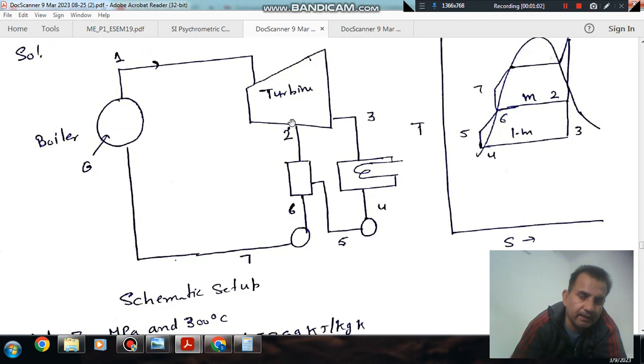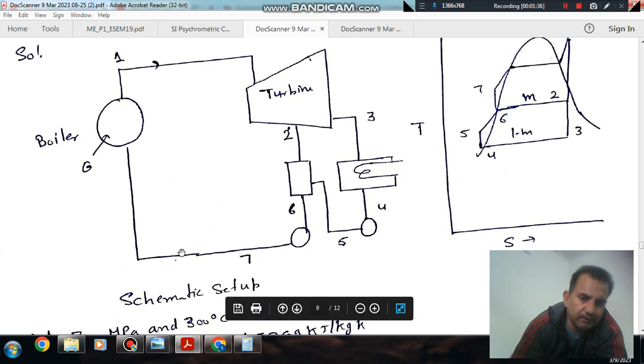The steam is extracted from the turbine. After the turbine, steam enters the condenser and then it goes to pump 1, and then it is getting mixed with the extracted steam in the feedwater heater. The mixture exits at point 6, then it enters pump 2, and at point 7 it leaves the pump and enters the boiler. And this cycle is repeated.